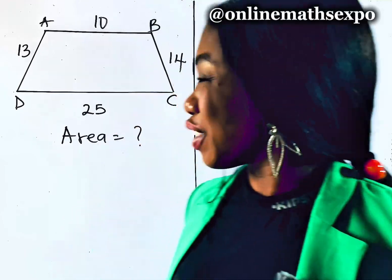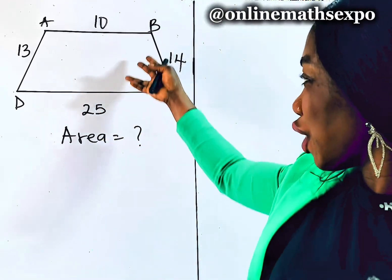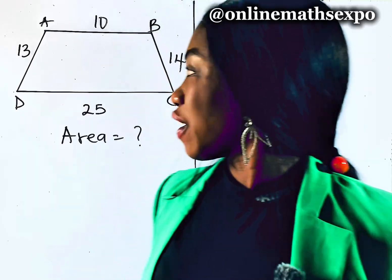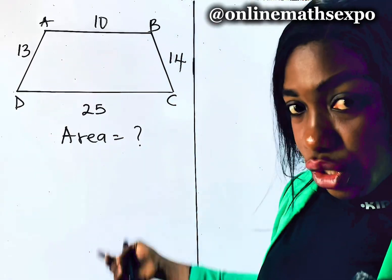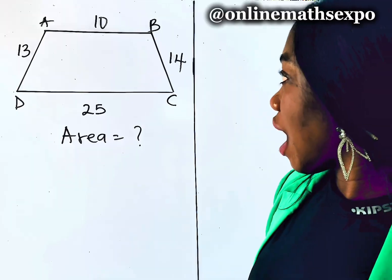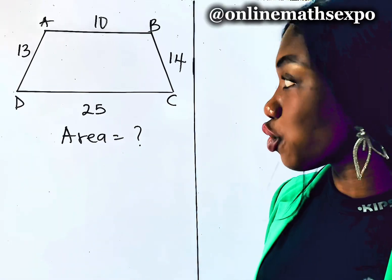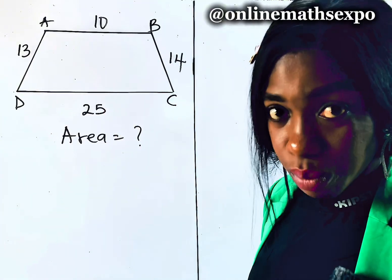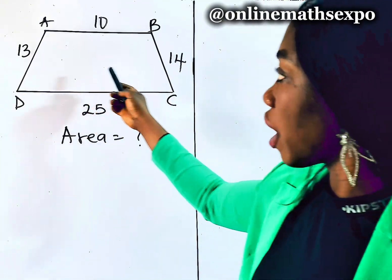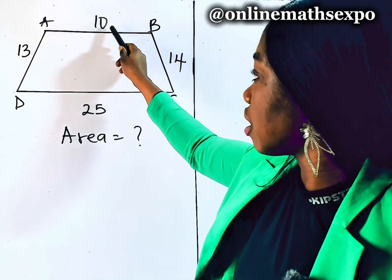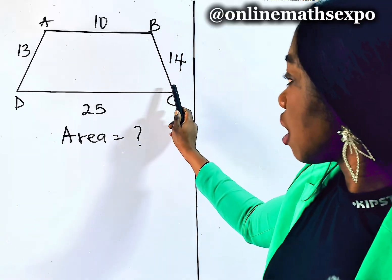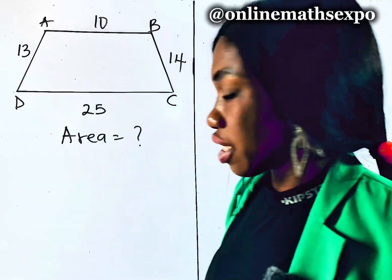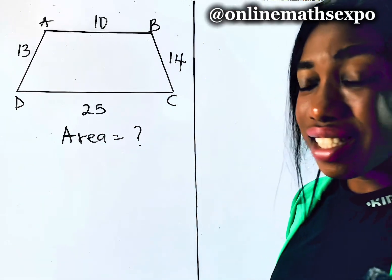Welcome, and let's solve this beautiful geometrical problem together. This is a trapezoid and we are asked to find the area — the amount of space inside this plane shape. From this diagram we have length AB is 10, BC is 14, CD is 25, and AD is 13.